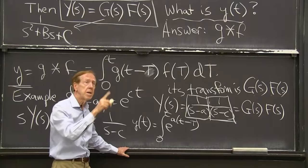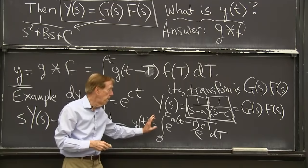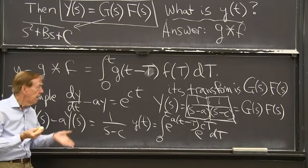And what is the inverse transform of 1 over s minus c? e to the cT dT. So I have used the, I've just put in what I know in the convolution formula. And this should be the correct answer.